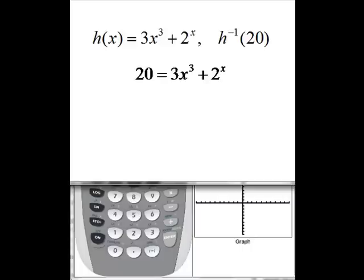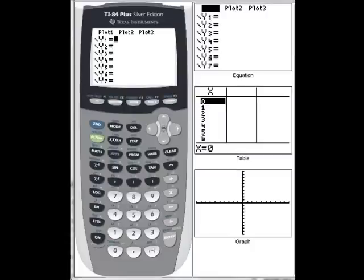We're going to do that with the graphing calculator. So let's take a look. So we bring up our graphing calculator, and first thing we'll do is we'll put in our function for y1. So 3x cubed plus 2 to the x, 2 raised to the x.